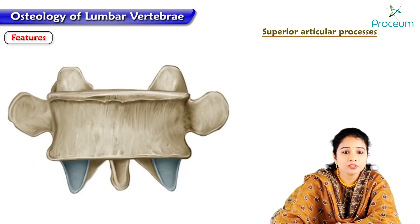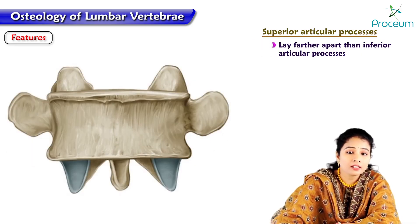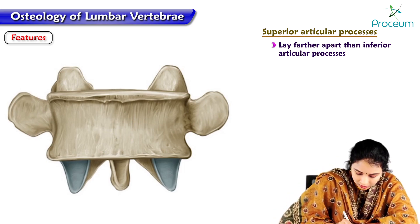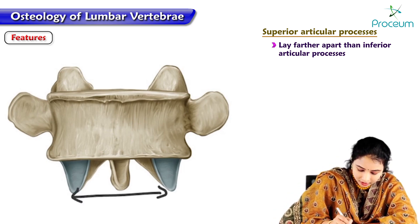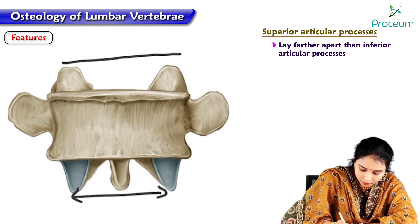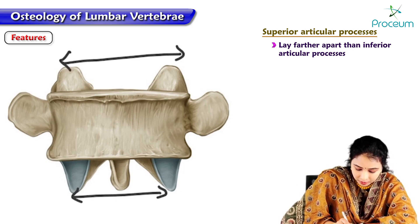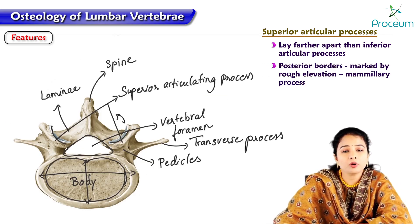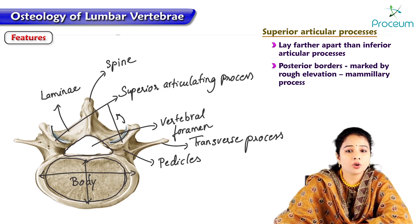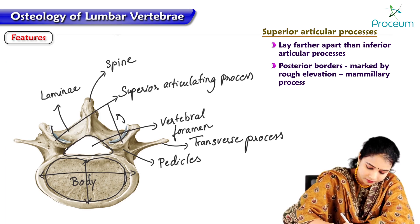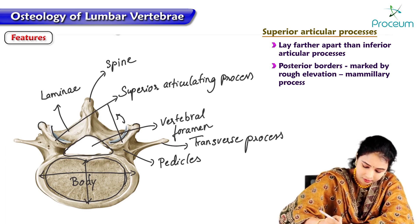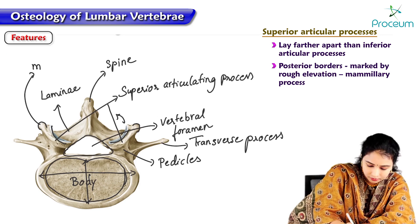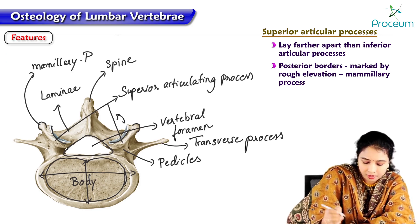The superior articulating processes lay farther apart than the inferior articulating processes. The distance between the two superior articulating processes is greater than the distance between the two inferior articulating processes. The posterior border of the superior articulating process is marked by a rough elevation called the mammillary process.